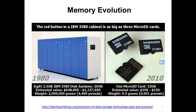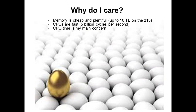So why should you care if memory is cheap and plentiful? The latest IBM z13 can have up to 10 terabytes of RAM. CPUs are obviously fast and continue to get faster — five billion cycles per second is a staggering number. When we measure things, we're generally concerned about CPU time: what CPU is our application using and what can we do to improve that?